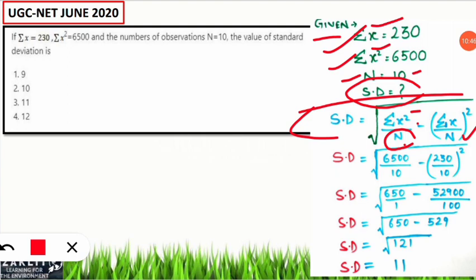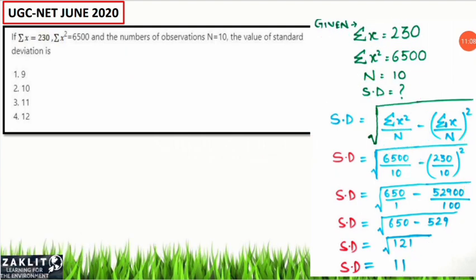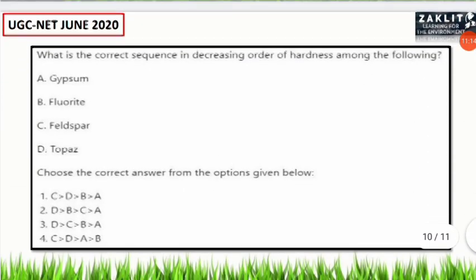Solving: 65 − 529/100... working through the values gives √121 = 11. So option number three is the correct answer. Remember this formula and don't forget it next time.